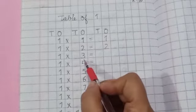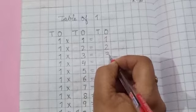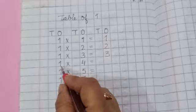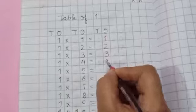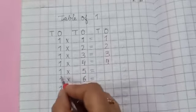One, threes are three. One, threes are three. One, fours are four. One, fours are four.